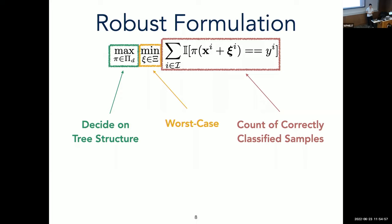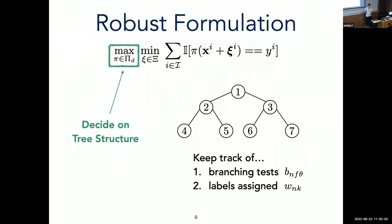So let's walk through this formulation step-by-step. So to decide this tree structure, we want to keep track of the branching set of tests and the labels that are assigned. And so we'll collect these through these binary decision variables, b and w, respectively. And so we can describe our decision tree through these decision variables.